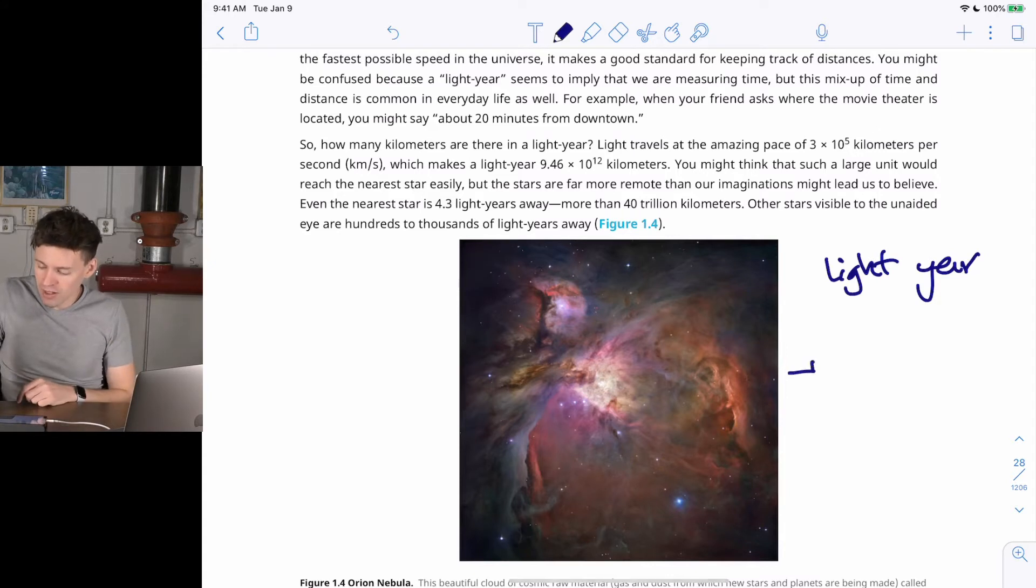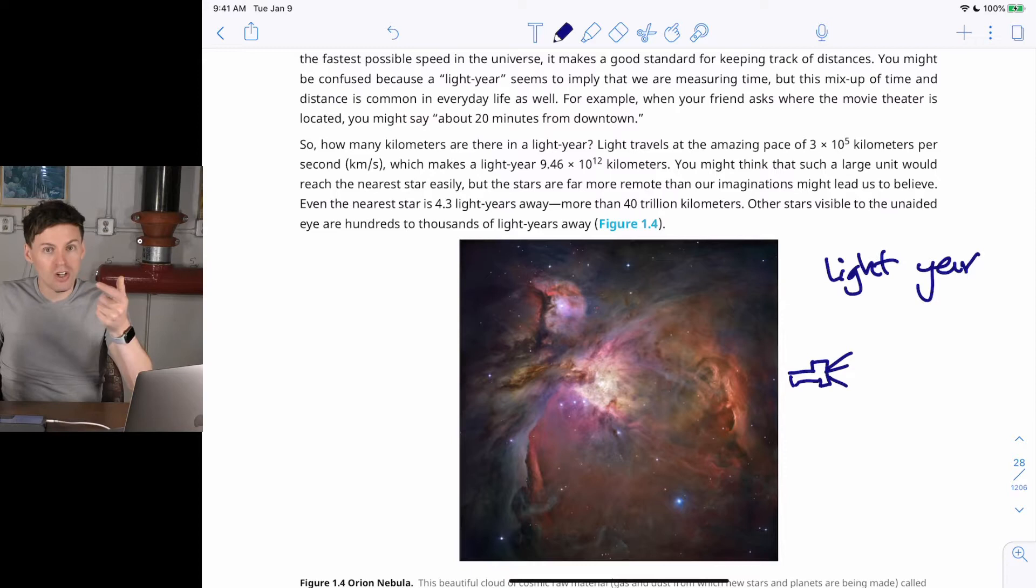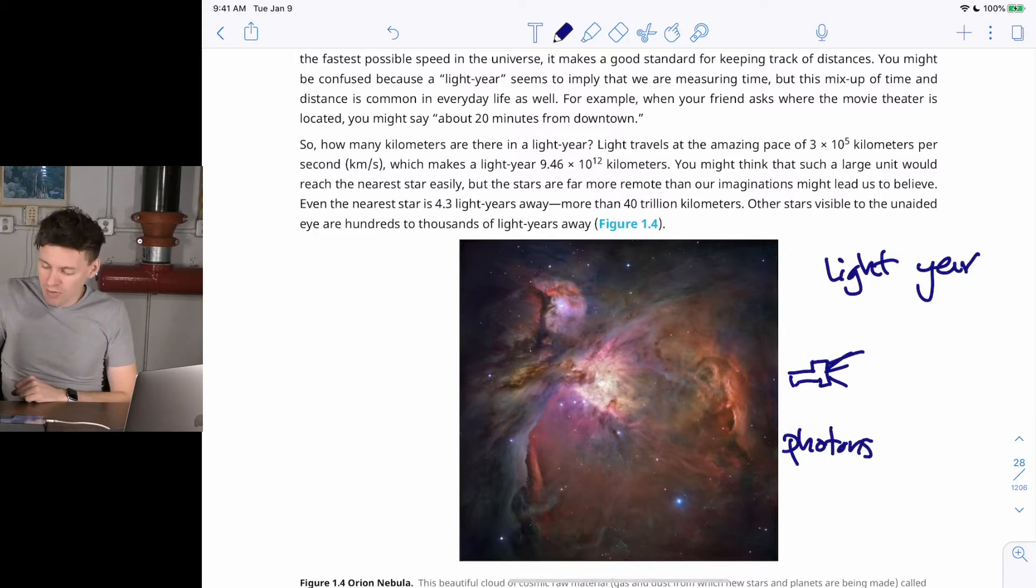So if you imagine taking a flashlight and clicking it on, as soon as you turn it on, light, we call them photons. Photons are the individual component of light. Photons leave the flashlight. Rays of light start to go out. Those rays of light fly off at light speed.